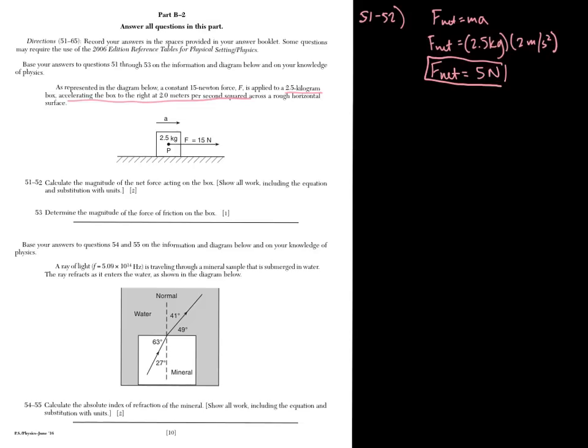You can still get one out of two points if you mess up somewhere and you can still get credit for the other. You can mess up in the work for 51, but you still ended up with 5 newtons, then you'll get the point for 52.